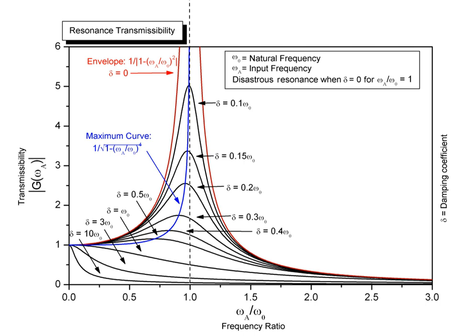Resonance occurs when a system is able to store and easily transfer energy between two or more different storage modes, such as kinetic energy and potential energy in the case of a simple pendulum. However, there are some losses from cycle to cycle, called damping. When damping is small, the resonant frequency is approximately equal to the natural frequency of the system, which is a frequency of unforced vibrations.